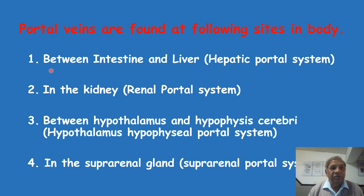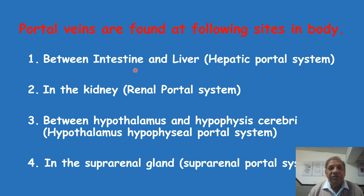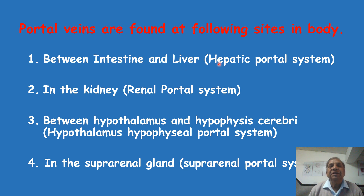The first place where you get the portal vein is between the intestine and the liver. The intestine — both large and small — is where absorption of food, water, minerals, and salts takes place. This intestinal blood then goes to the liver, and this portal system is called the hepatic portal system. The second place is in the kidney, and the portal veins there are called the renal portal system.